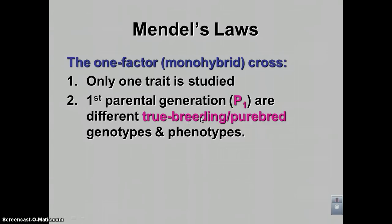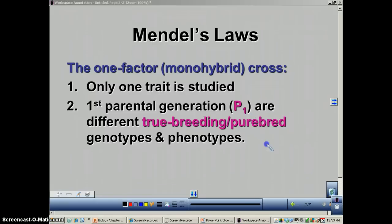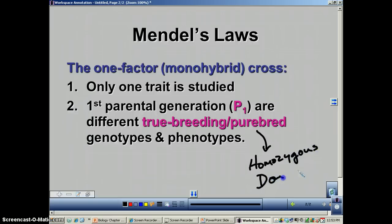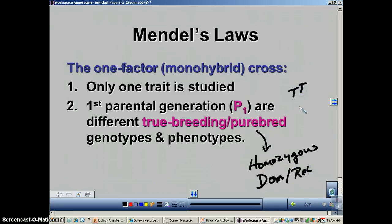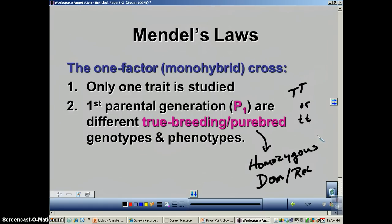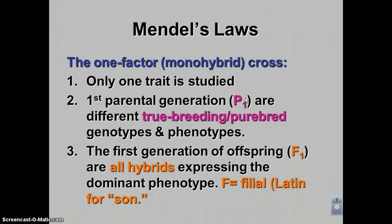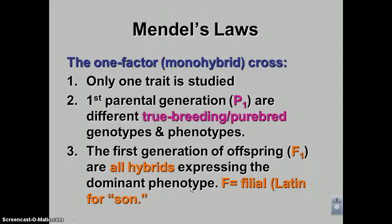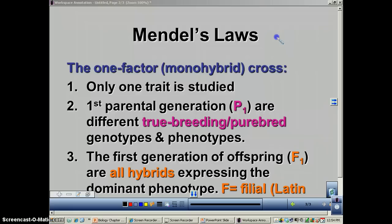True breeding means they were either homozygous dominant or homozygous recessive — so either big T big T, or little t little t. Their genotypes always breed true: one can only give the tall allele, the other can only give the short allele. The first set of offspring were always hybrids, and this first set of offspring is referred to as the F1. The 'F' comes from the Latin word for son, which is 'filial,' and the '1' stands for first.